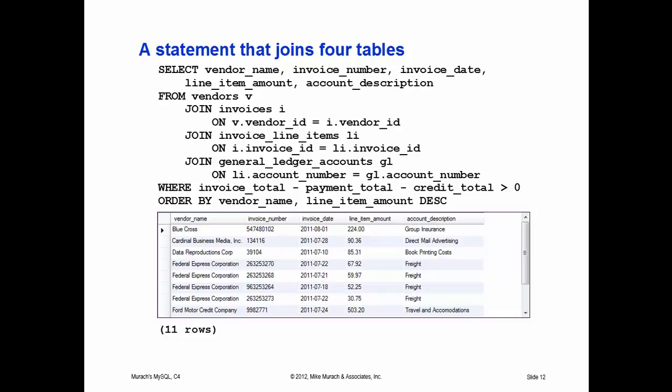Here is a statement that joins four tables. The key thing to realize is we have three join statements — there will always be one less join statement than the number of tables you're joining. So joining two tables means one join, three tables means two joins, and four tables means three joins. Occasionally you'll want information and there may be 20, 30, 50, or 100 different tables in the same database, and the data may be there but you may have to join a lot of tables to get it. Here we're joining the invoice table, the vendor table, the general ledger accounts table, and the invoice line items table.